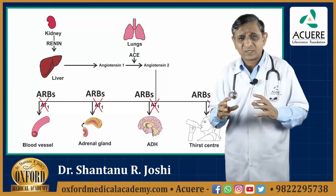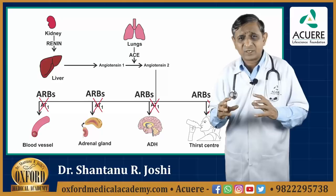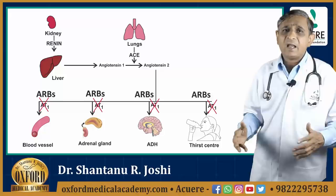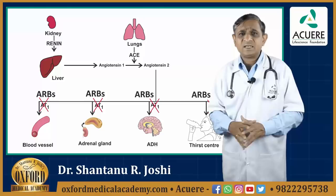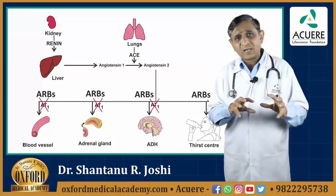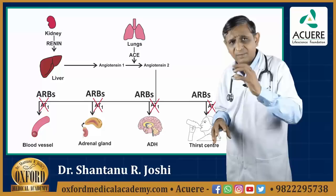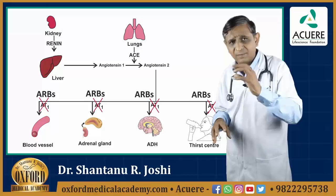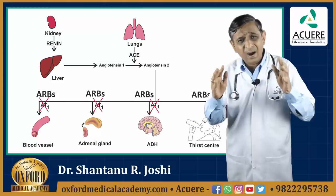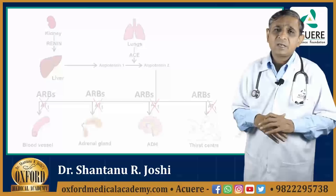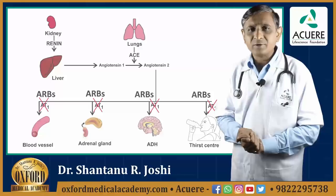When we block the AT1 receptors in the thirst center in the brain, the person will not have much thirst. Water intake will be limited, blood volume will not expand, cardiac output will not increase, and systolic blood pressure will decrease. This is how Telmisartan blocks the AT1 receptors in the peripheral blood vessels, in the adrenal cortex, in the posterior pituitary, and on the thirst center. All actions of angiotensin-2 will be blocked by Telmisartan, and there will be reduction in both systolic and diastolic blood pressure.